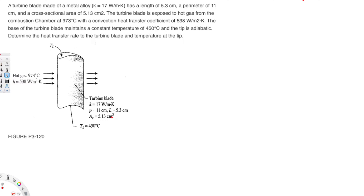This question is asking: a turbine blade made of metal alloy has a length of 5.3 centimeters, a perimeter of 11 centimeters, and a cross-sectional area of 5.13 centimeter squared. The turbine blade is exposed to hot gas from the combustion chamber at 973 degrees Celsius with a convection heat transfer coefficient of 538 watts per meter squared Kelvin. The base of the turbine blade maintains a constant temperature of 450 degrees Celsius and the tip is adiabatic. Determine the heat transfer rate to the turbine blade and the temperature at the tip.